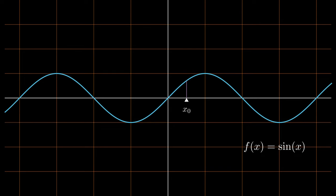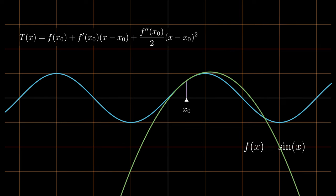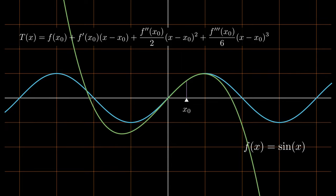Then our approximated function t should of course have the same value as the original function in that point. And then t should probably have the same derivative in x0 as f does, so that its slope is the same. And then t should probably have the same second derivative in x0 as f does, so that its curve is the same. And so on, as long as you want to.